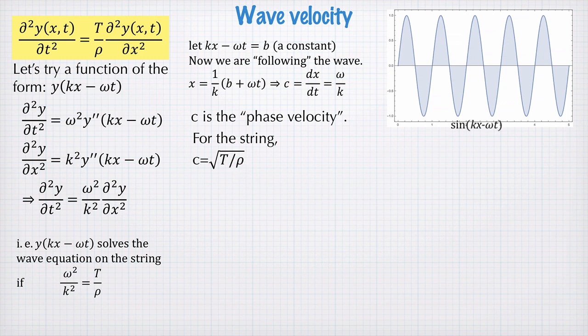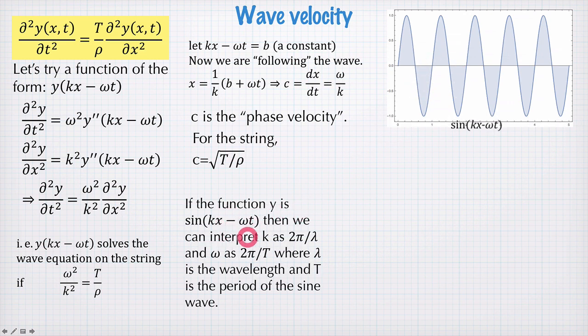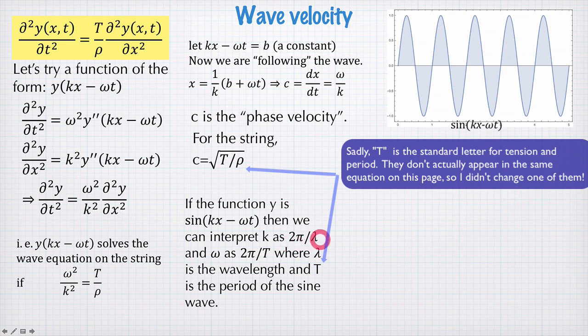Now in the particular case where the function y is a sine or cosine wave, as I illustrated up here, we can identify k as 2π divided by the wavelength, so that's the distance between the waves in the x direction,